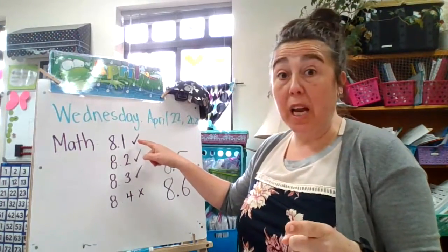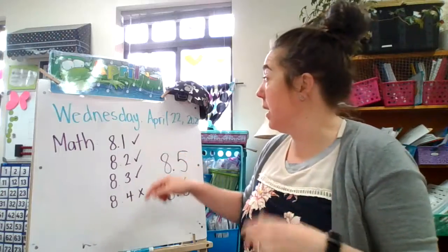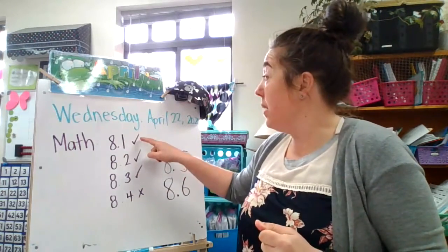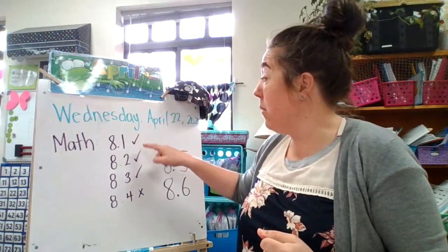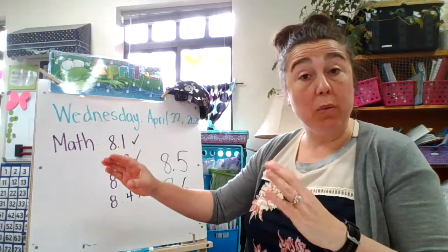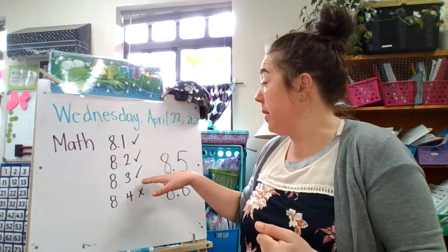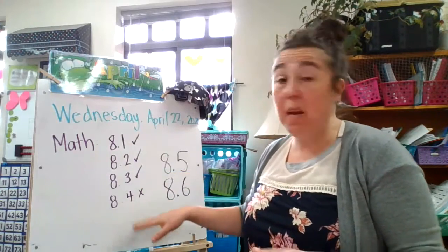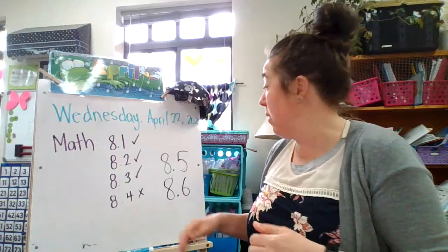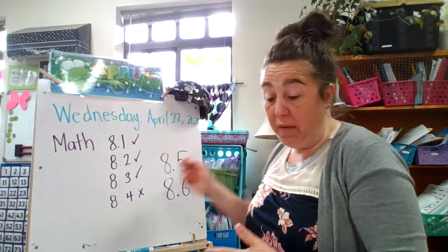Two days ago, 8.1 and 8.2 helped us with writing numbers 1 through 20, counting to 20. Same with 8.3. And then 8.4 we skipped — it's sort of not in the scope of what we were doing. So today we're going to go to 8.5.